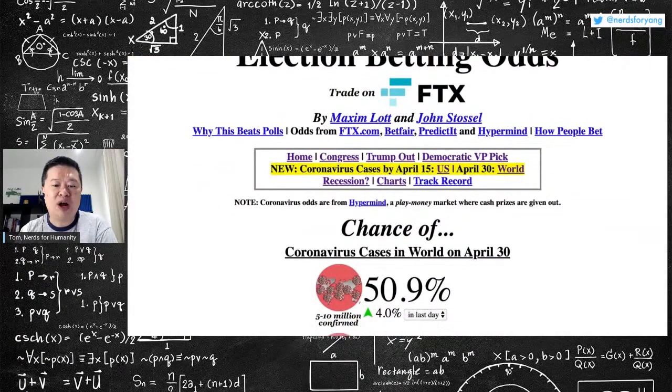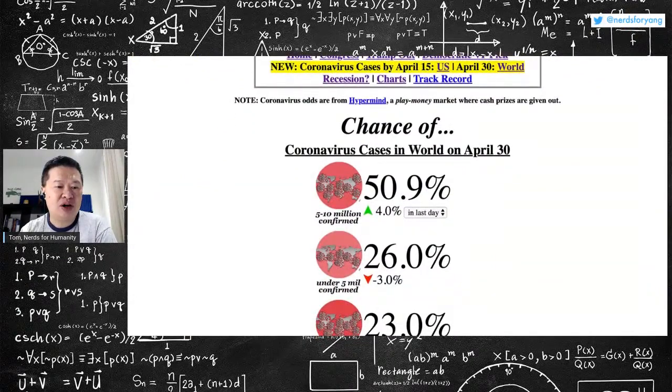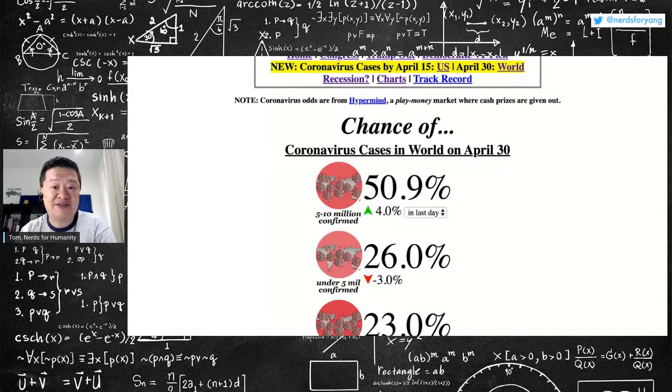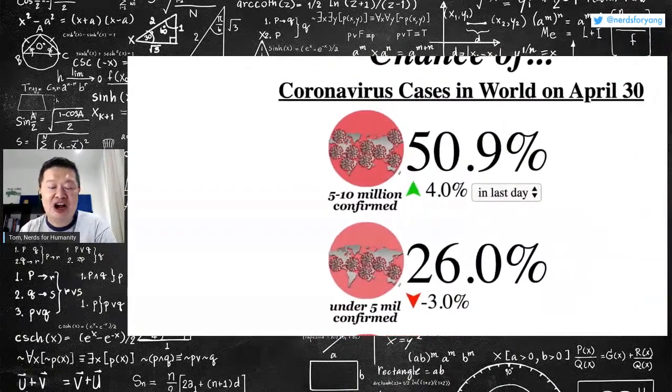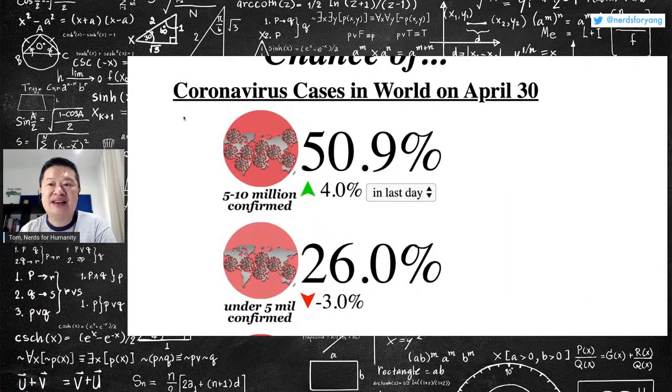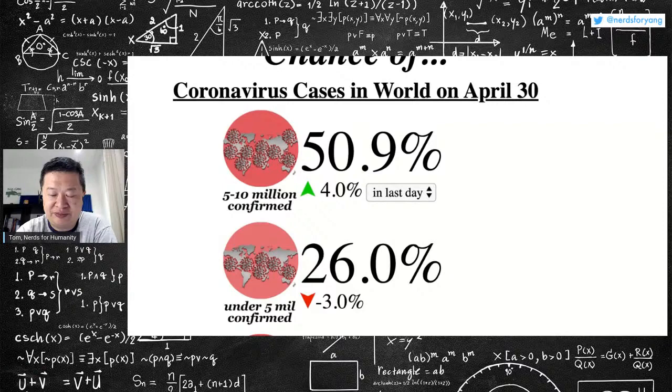Now, the gamblers think that worldwide, and as a reminder, right now worldwide we have 1 million cases confirmed. Most gamblers are assuming that by the end of April, we're going to have 5 to 10 million cases.